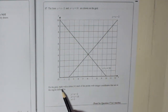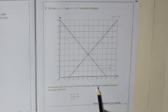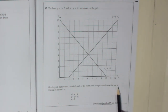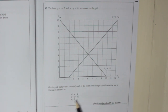On the grid, mark with a cross each of the points with integer — that means whole number — coordinates that are in the region defined by: y is greater than x minus 2, x plus y is less than 10, and x is greater than 3.